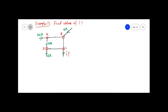At node A, this 20 ampere is incoming current, and this 10 ampere is outgoing current from node A. So what is the value of branch AB? AB is 20 minus 10, so the value will be 10 ampere. Current flowing through AB is 10 ampere.